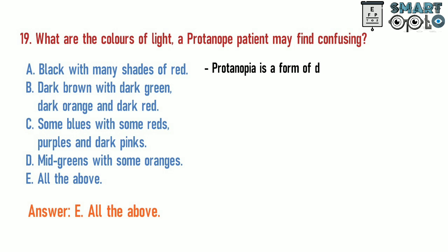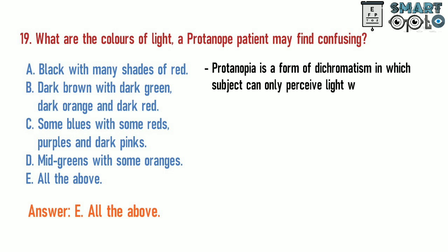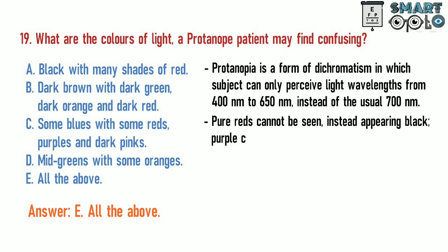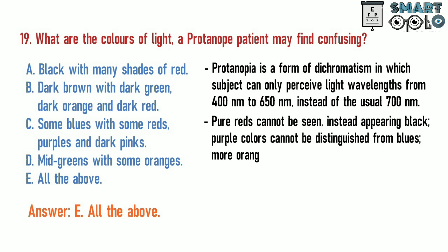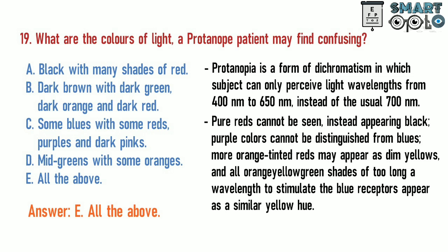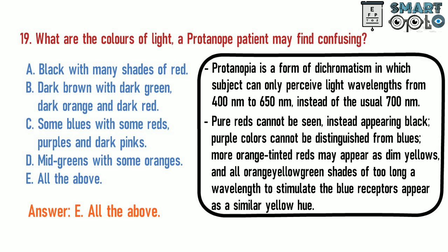Protanopia is a form of dichromatism in which the subject can only perceive light wavelengths from 400nm to 650nm instead of the usual 700nm. Pure reds cannot be seen, instead appearing black. Purple colors cannot be distinguished from blues. More orange-tinted reds may appear as dim yellows, and all orange-yellow-green shades of too long a wavelength to stimulate the blue receptors appear as a similar yellow hue.